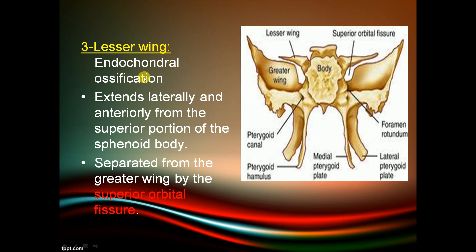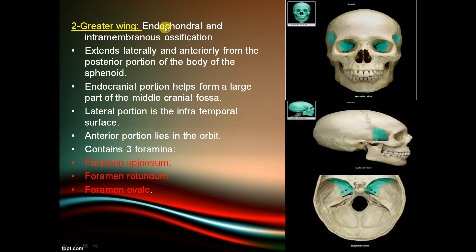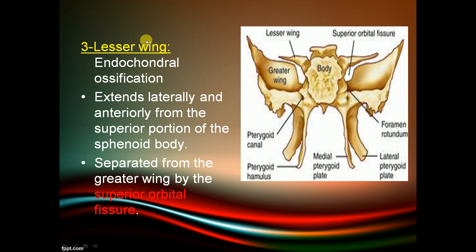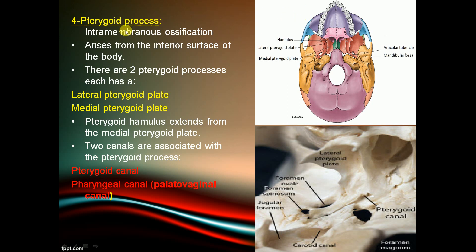The lesser wing undergoes only endochondral ossification. It extends anteriorly and laterally and is separated from the greater wing of the sphenoid. The pterygoid process undergoes intramembranous ossification and arises from the inferior surface of the body. There are two types: the lateral pterygoid plate and the medial pterygoid plate.